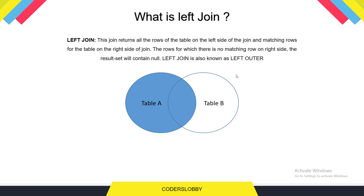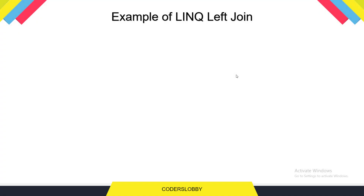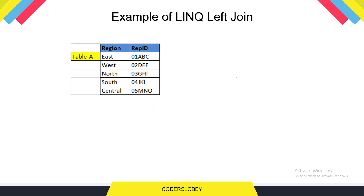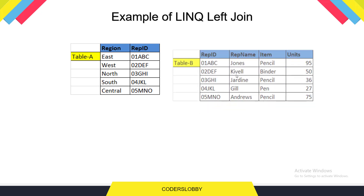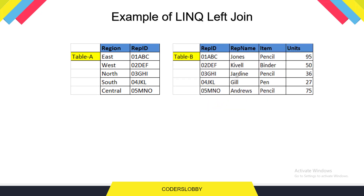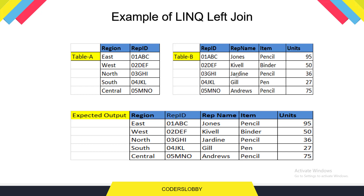Let me show you the example in the next slide. This is the example of LINQ left join. Table A contains region and representative ID, and table B contains representative ID, representative name, item, and units. The expected resultant data table would have region, representative ID, name, items, and units — that is the expected output from the LINQ left join.